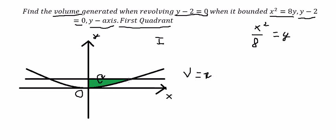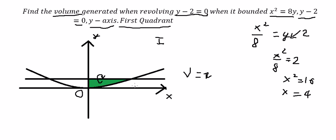First we need to find the intersection between the line and the curve. We have y minus 2 equal to 0, so we put y equal to 2 into the curve: x squared over 8 equal to 2, so x squared equal to 16, giving x equal to 4. The intersection is at x equal to 4.